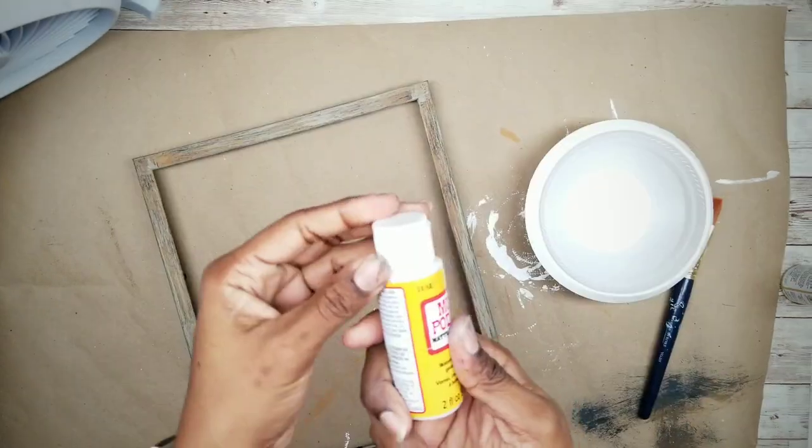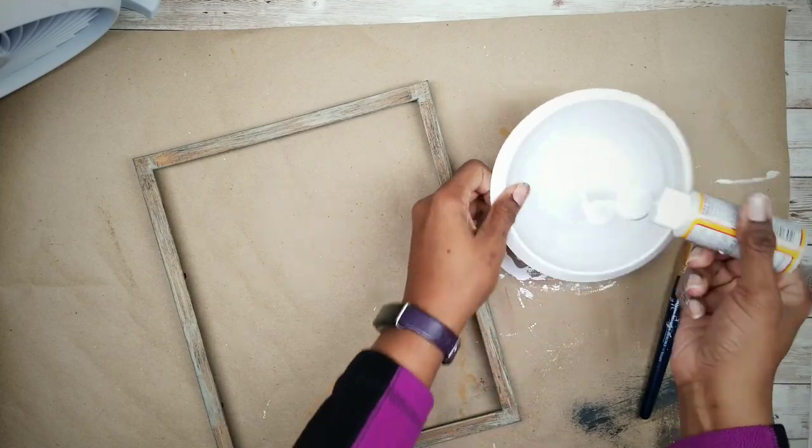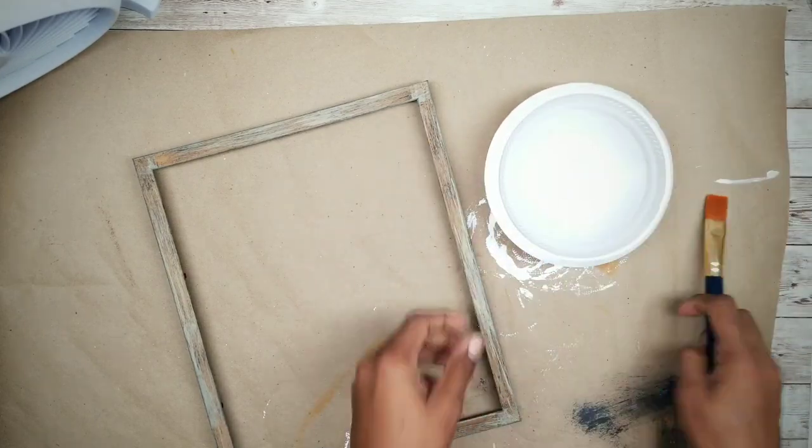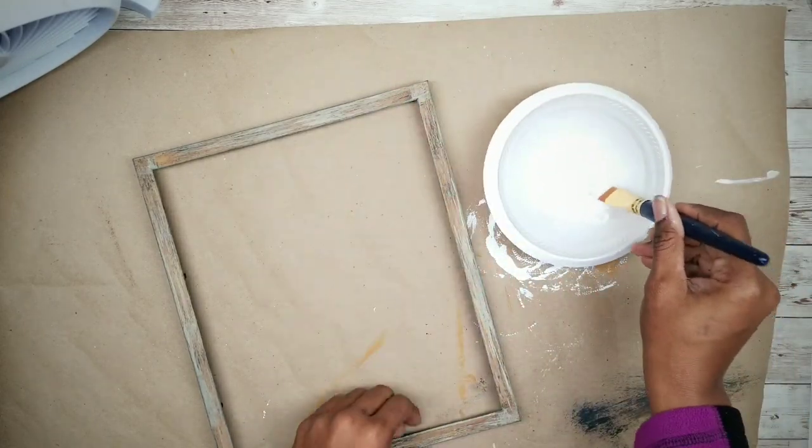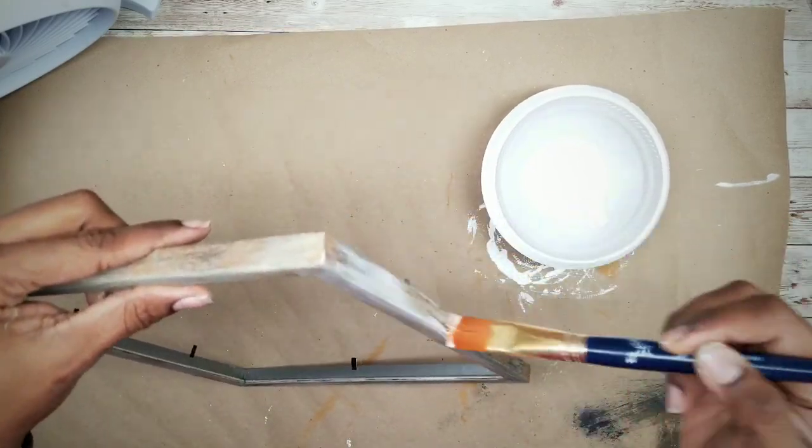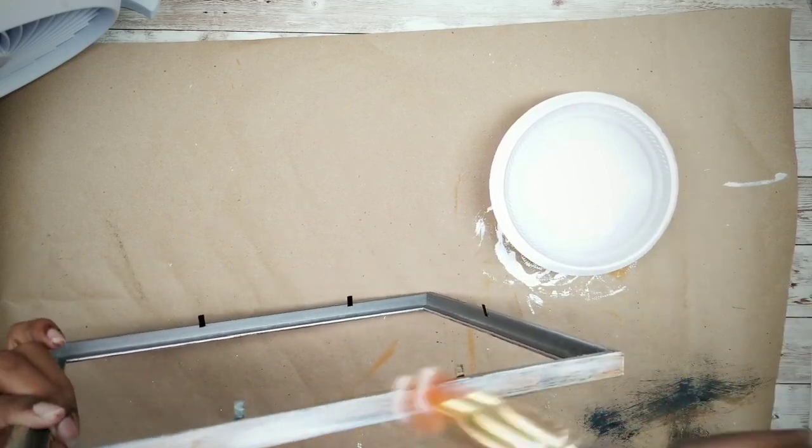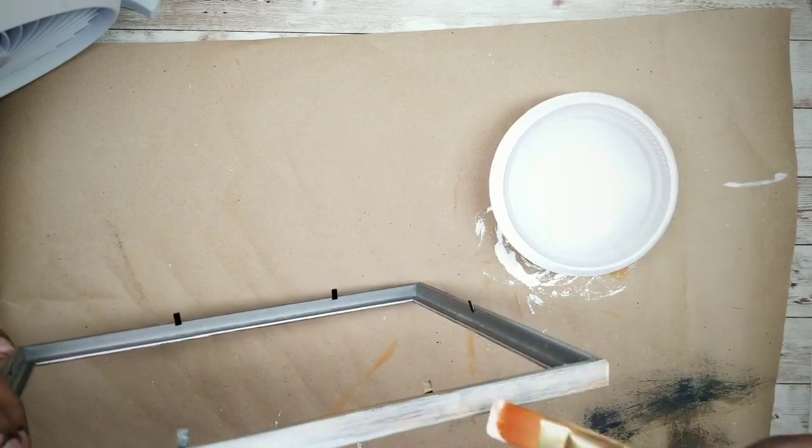And once that's dry, we want to go ahead and seal our frame with some Mod Podge. I'm going to apply one coat in the matte finish. And now just let that dry.